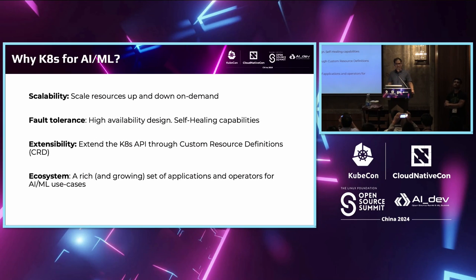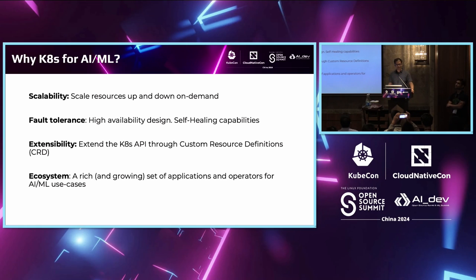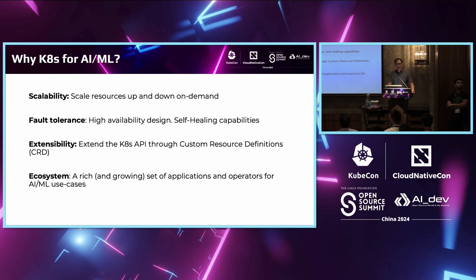So why would you use Kubernetes for AI/ML? You start off with support for scalability. Kubernetes has many features to scale up and down your workloads based on demand. For instance, if your inference workload increases significantly, Kubernetes has features to improve scalability there. In terms of fault-tolerance, Kubernetes has many built-in components for self-healing capabilities, which are particularly useful for GPU workloads. One of the cool features of Kubernetes is that it's very extensible through custom resource definitions, enabling a broad ecosystem of tools for AI/ML workloads.